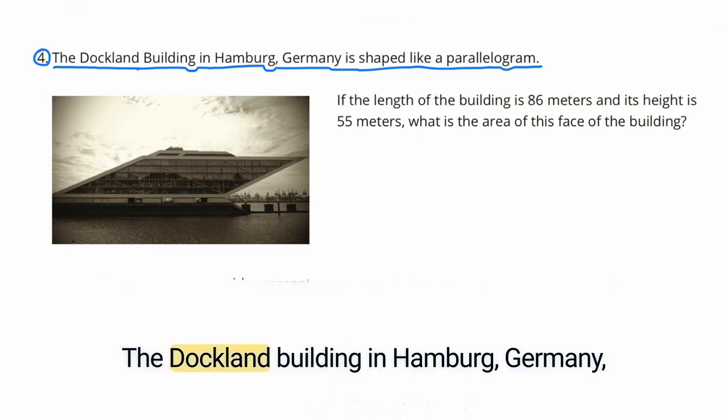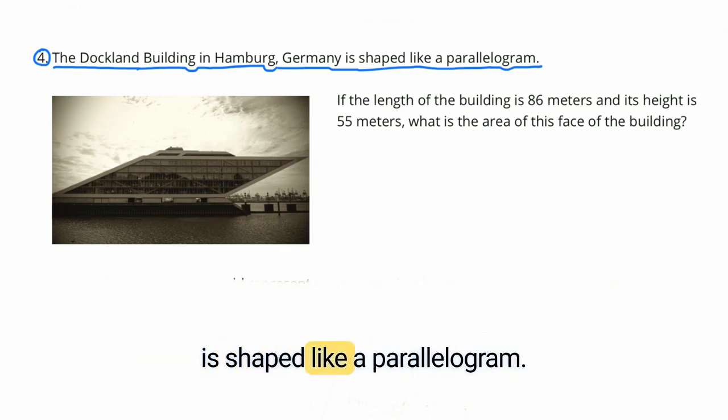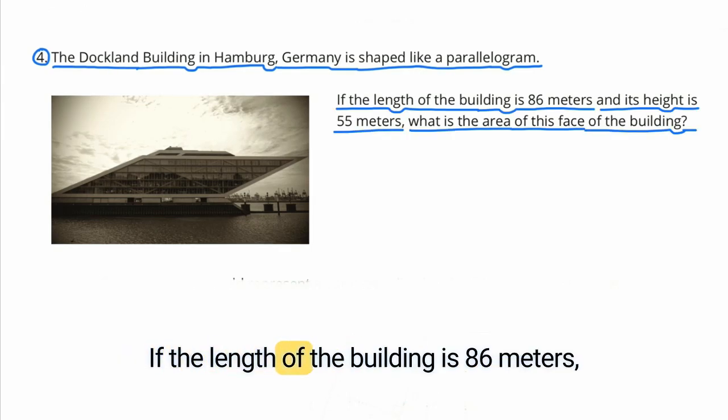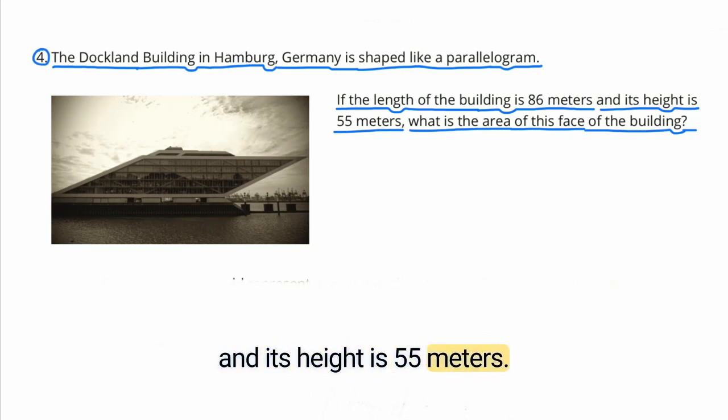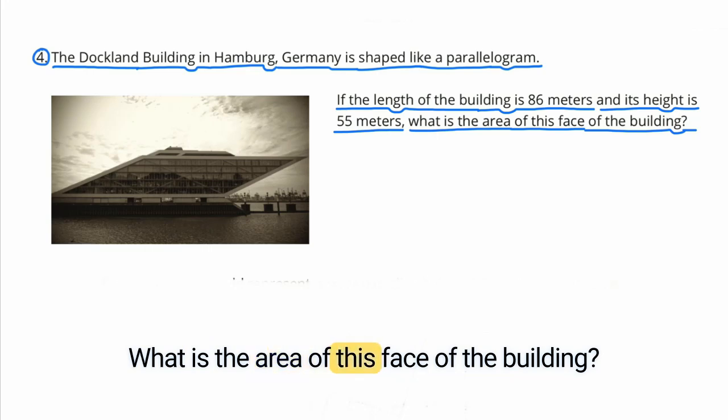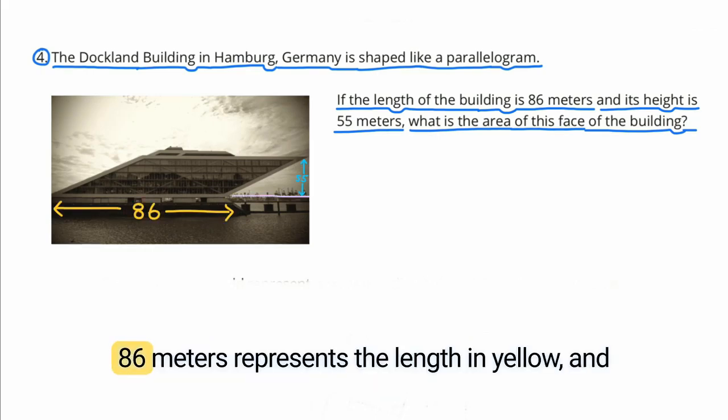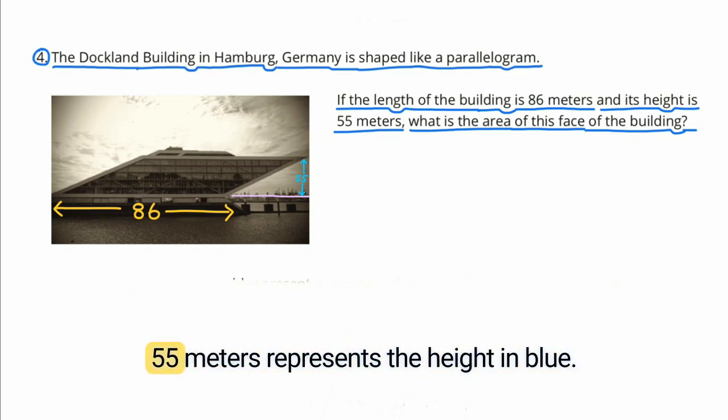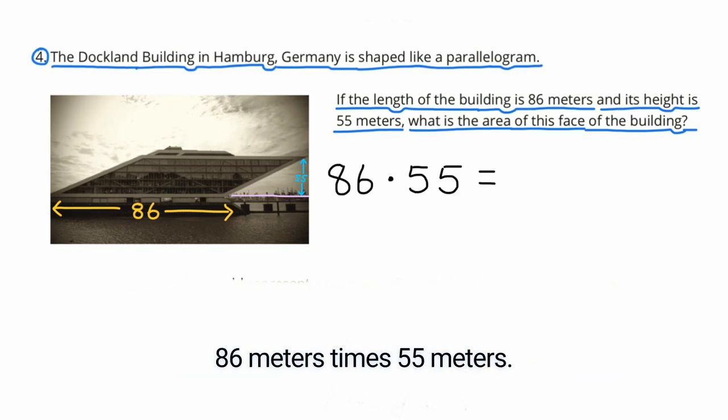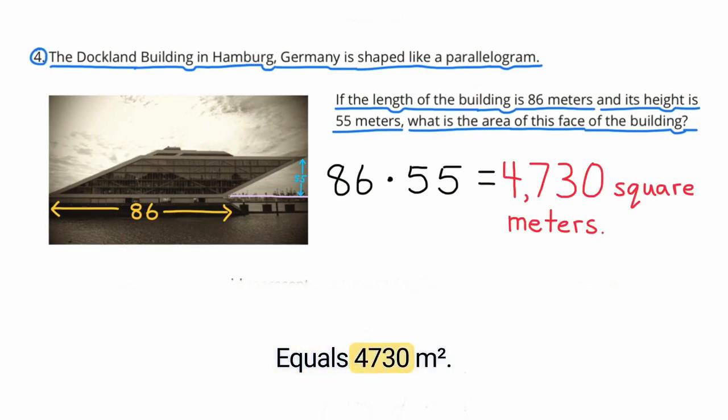Number 4. The Dockland building in Hamburg, Germany, is shaped like a parallelogram. If the length of the building is 86 meters, and its height is 55 meters, what is the area of this face of the building? 86 meters represents the length, in yellow, and 55 meters represents the height, in blue. 86 meters times 55 meters equals 4,730 square meters. The area of the face of the building is 4,730 square meters.